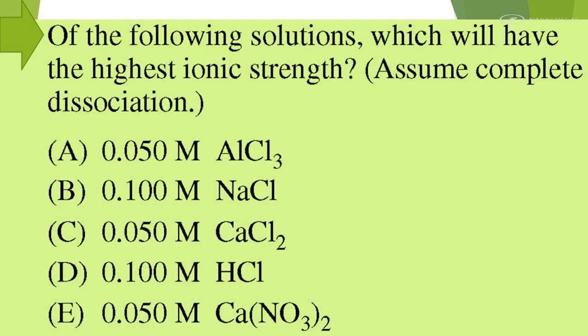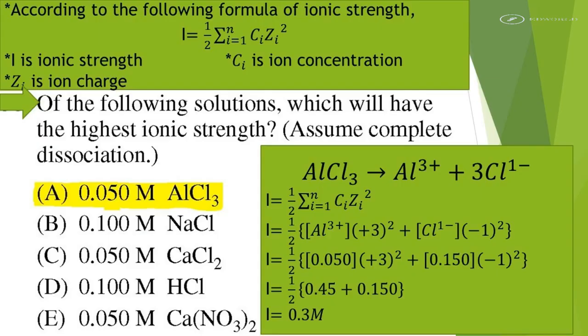Of the following solutions, which will have the highest ionic strength, assume complete dissociation? According to the following formula 0.05 molar aluminum chloride has highest ionic strength.